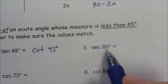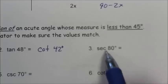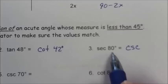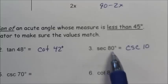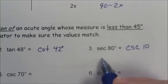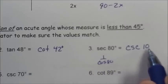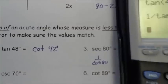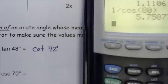Number 3: the secant of 80. 80 degrees is not less than 45, so we express it as the co-function. The co-function of secant is cosecant, and the complement of 80 is 10. To key secant into the calculator, that's 1 over cosine. To check cosecant of 10, key in 1 over sine 10. So 1 divided by cos 80, and 1 divided by sine 10.